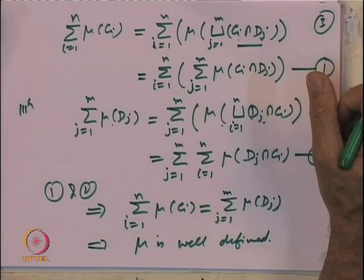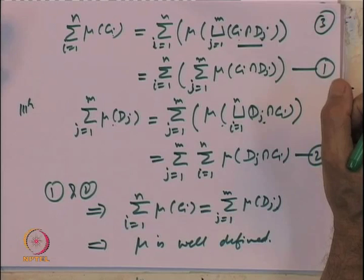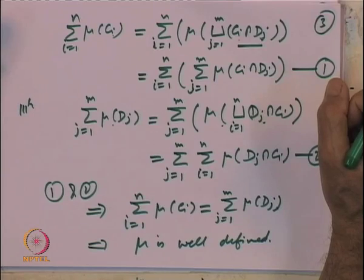What we have shown is: any element E in the algebra generated by the semi-algebra can be represented as a finite disjoint union of elements C_i in the semi-algebra. Pick any such representation and define μ̃(E) = Σ_{i=1}^{n} μ(C_i). It does not matter which representation you choose — you will always get the same sum, so μ̃(E) is well-defined.